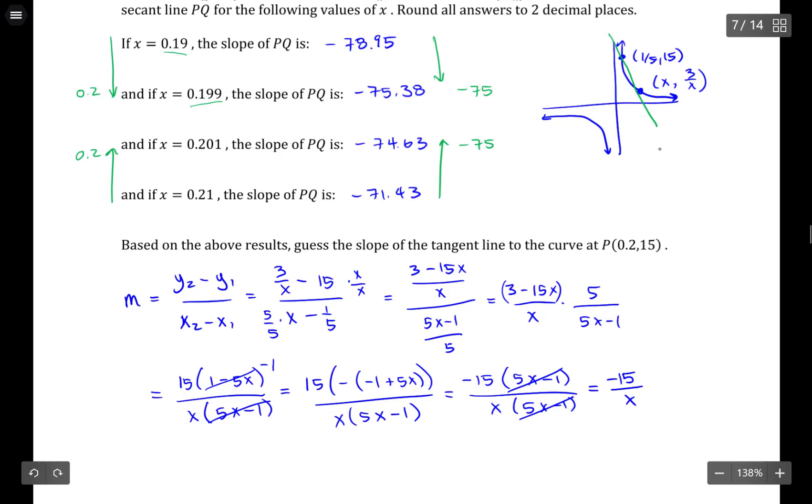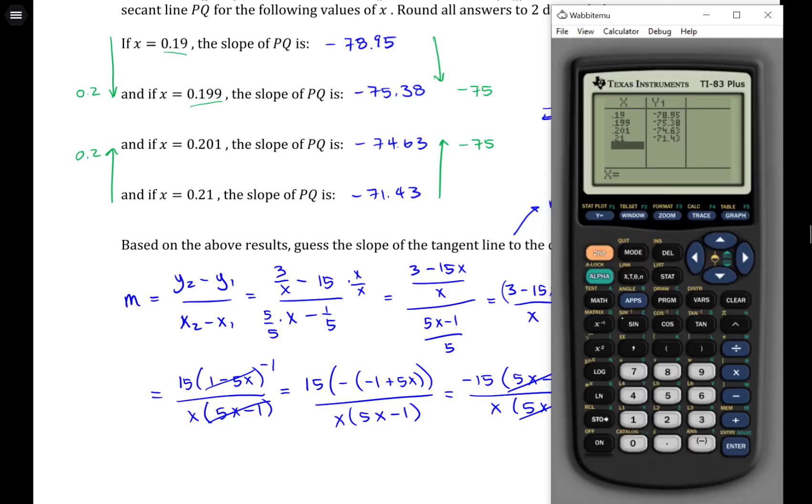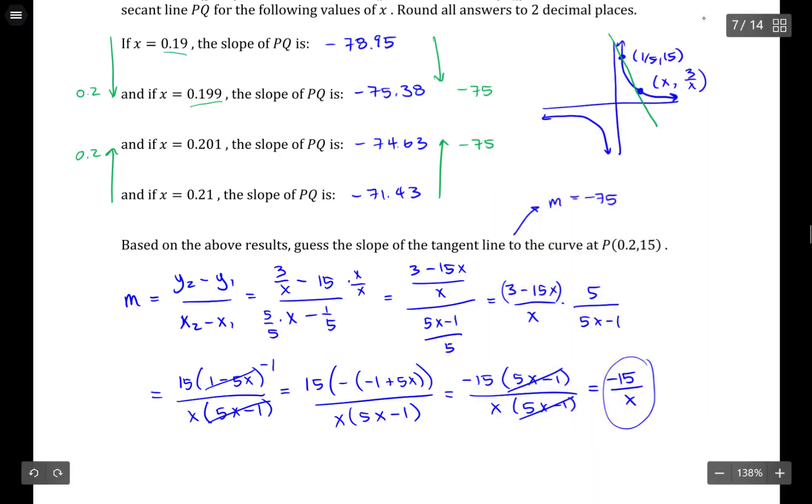So I would say the answer to this, a good guess to the value of the slope of the tangent line, would be negative 75. And in fact, with this form of the function right here, you can actually plug in the limit value now. You could take 0.2 and just plug that into the function, and it would calculate. You canceled out this factor here, which was causing the 0 over 0 situation. So you can just use the function itself.